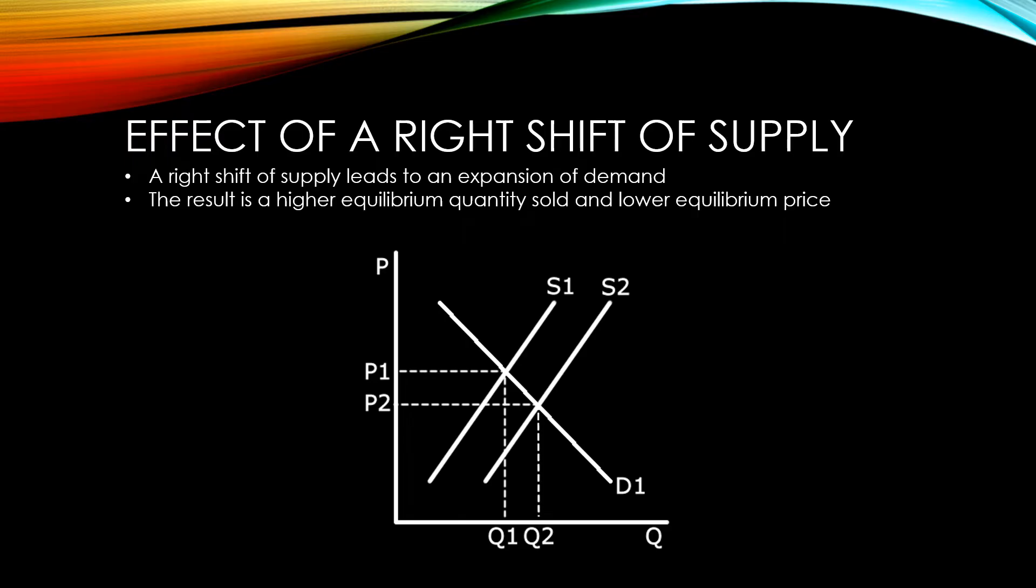If you imagine the supply curves labeled the other way around, you can see that a left shift of supply would lead to a higher equilibrium price and lower equilibrium quantity.